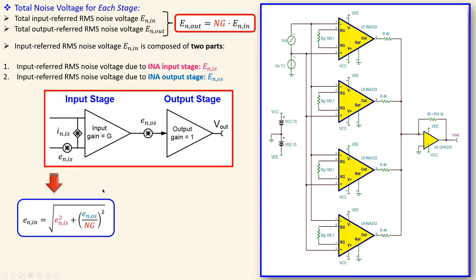Looking at the frequency response slope in different regions: from 10 kHz to 100 kHz — one decade — the gain decreases from 31.5 dB to 11.3 dB, approximately 20 dB per decade. This confirms the circuit behaves as a first-order system up to about 100 kHz, which is sufficient for our noise calculations. Our noise analysis correctly assumed a first-order approximation for the circuit.